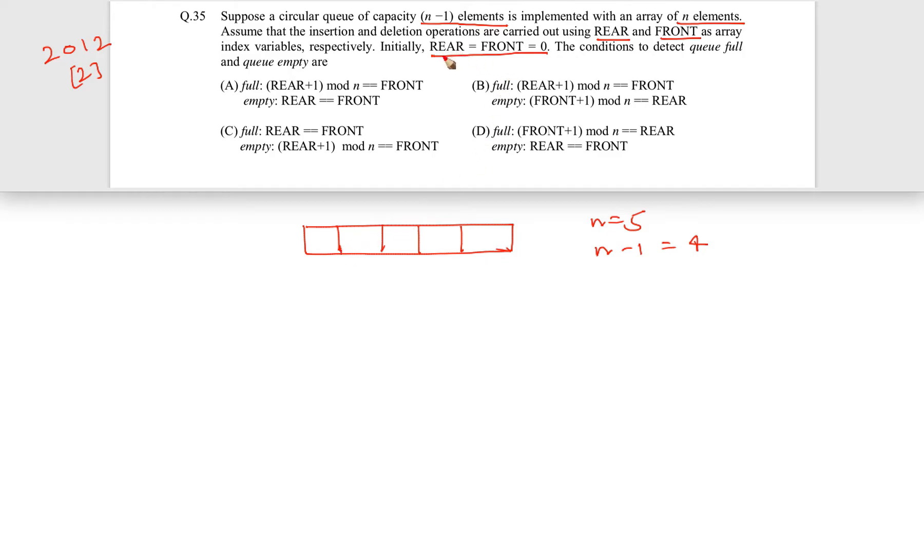They are also saying that rear and front, the front and rear, initially both are pointing to the index 0. So, this is index 0, this is 1, 2, 3, 4.